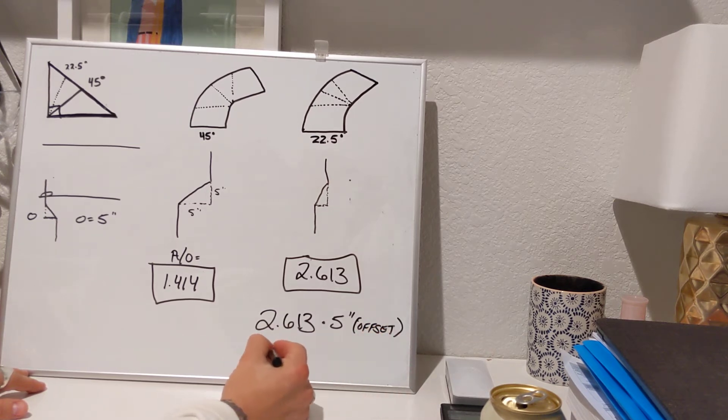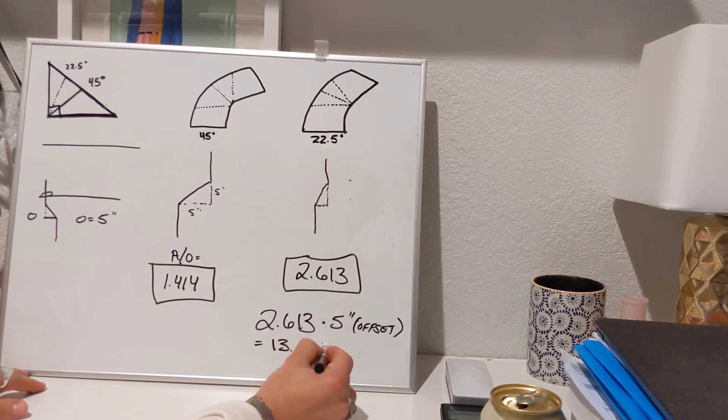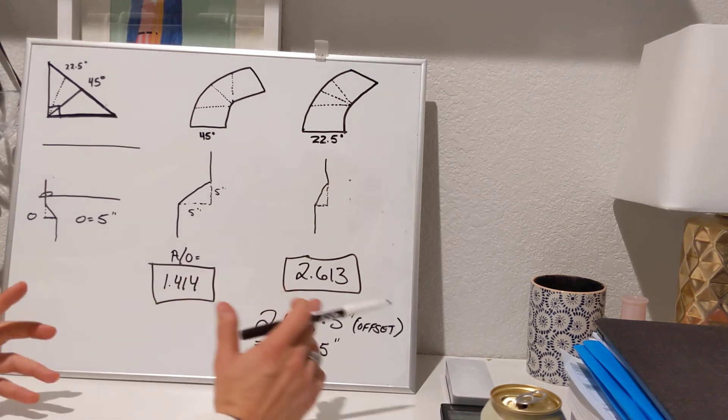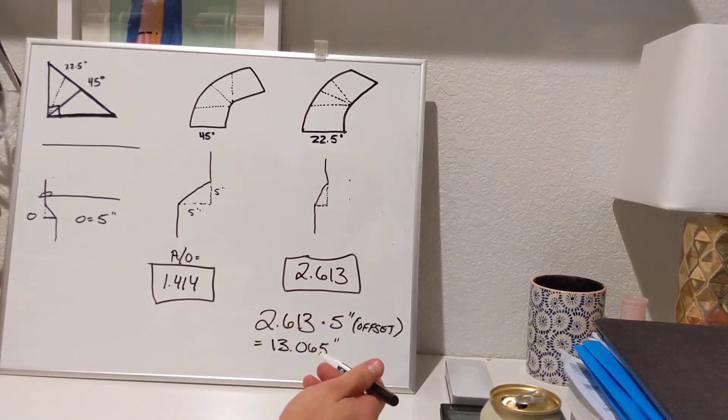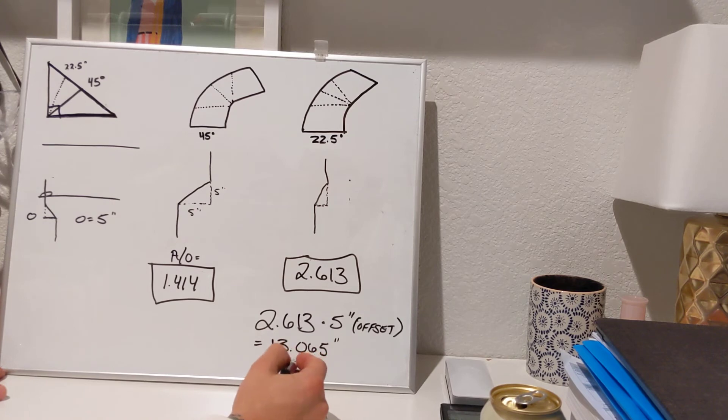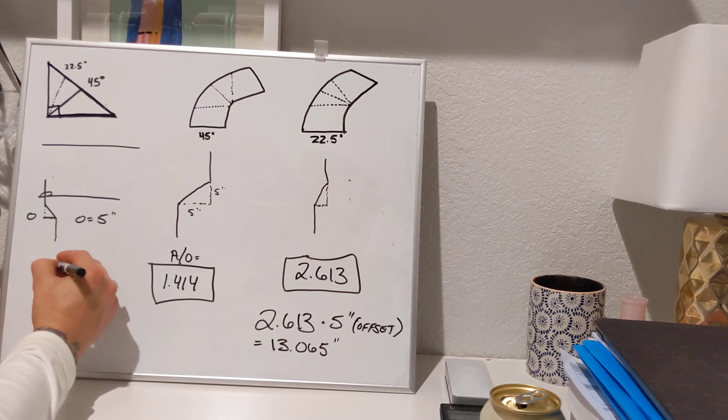If you multiply that, that's going to give you 13.065. Now in the field, when you're cutting, whether it be cast iron, PVC, or copper, you can get a little more particular. But we don't really work in sixteenths. I'll be honest, we usually work in eighths and we work in quarters. Because on bigger pipe it's not going to matter too much. But try and be as close as you can. This is closer to a whole number of 13 rather than an eighth.